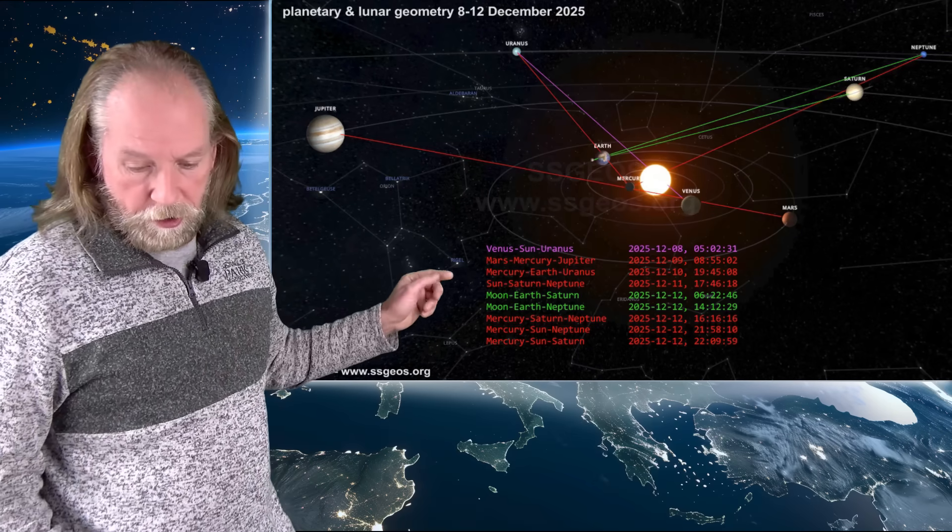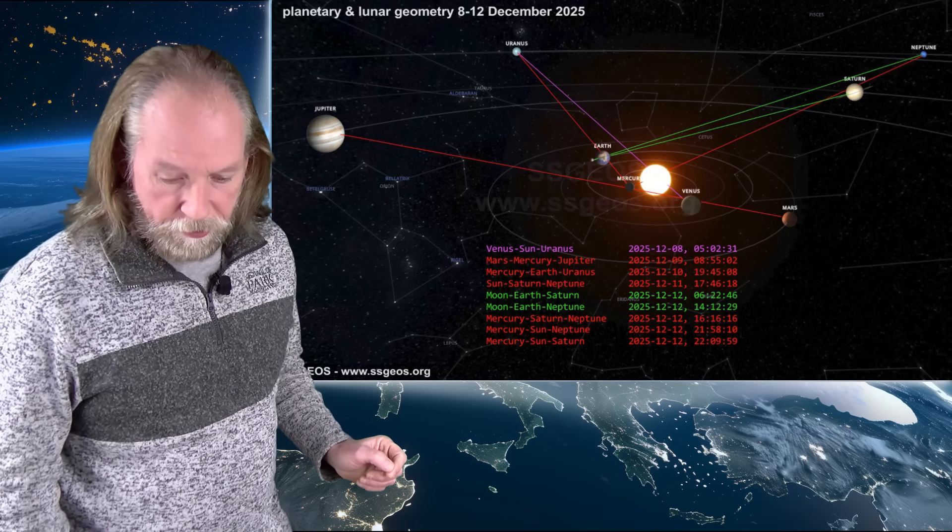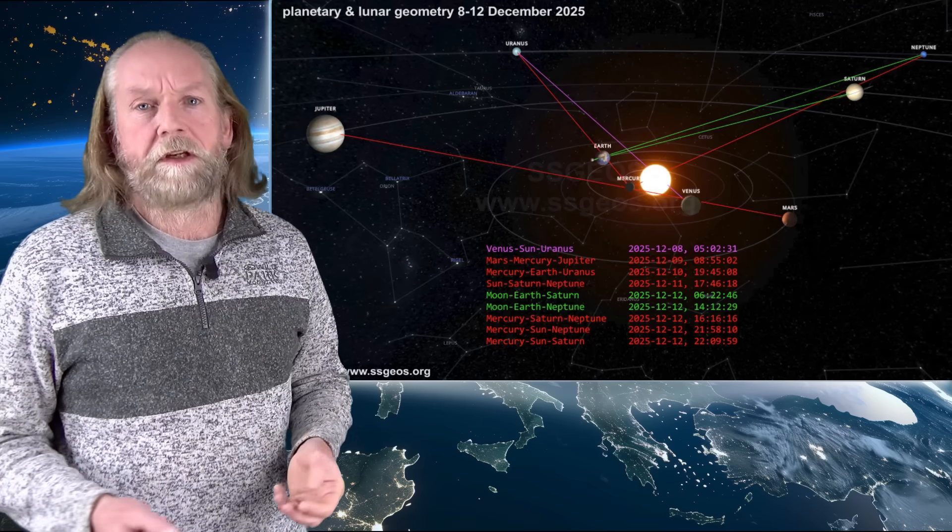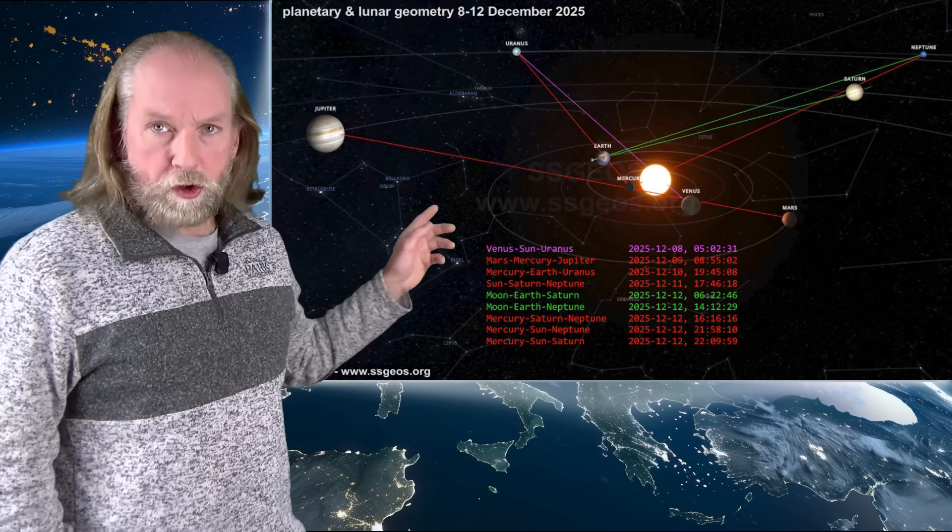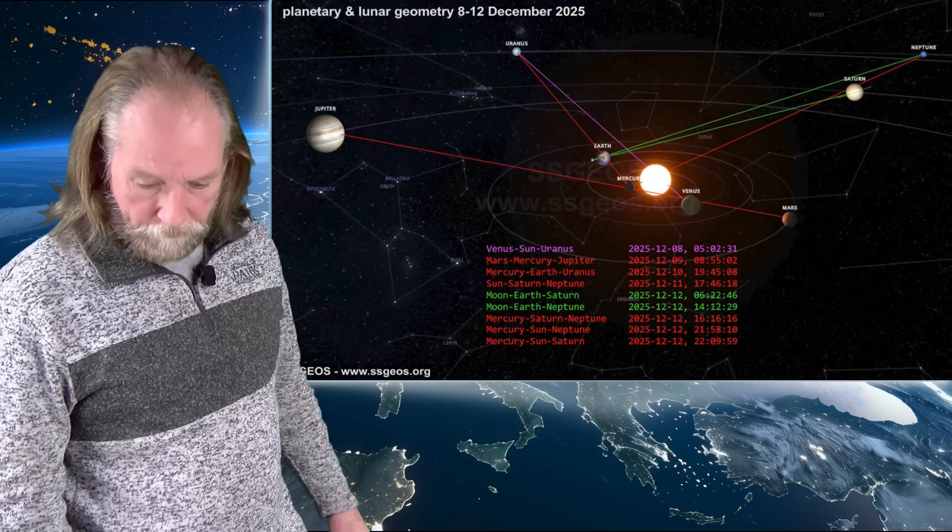But also Mars, Mercury and Jupiter is critical and then Mercury, Earth and Uranus. So far there was only a large aftershock 6.7 in Japan on the 12th and then we look at the lunar geometry that follows on the planetary geometry that is with Saturn and Neptune on the 12th.